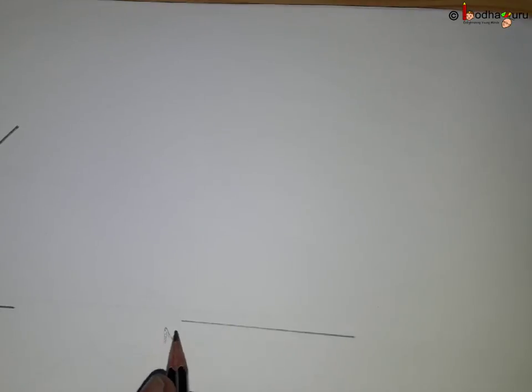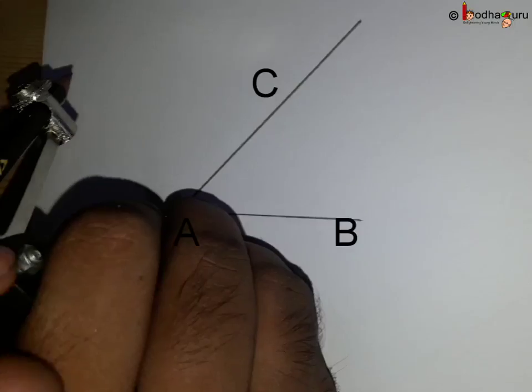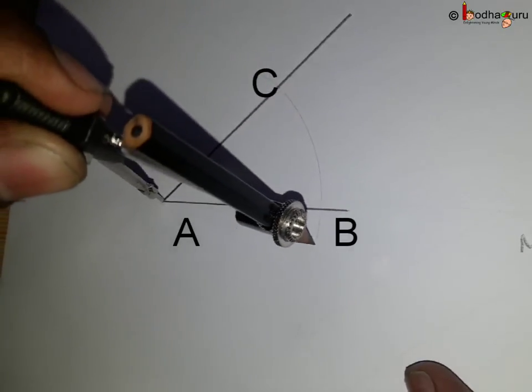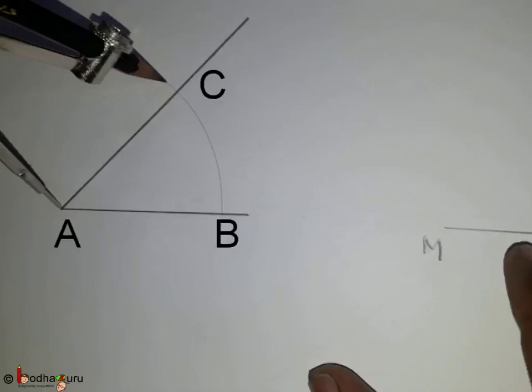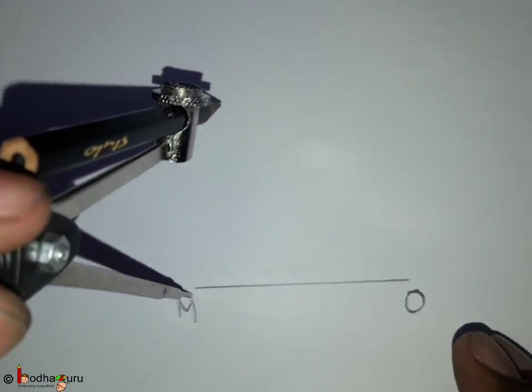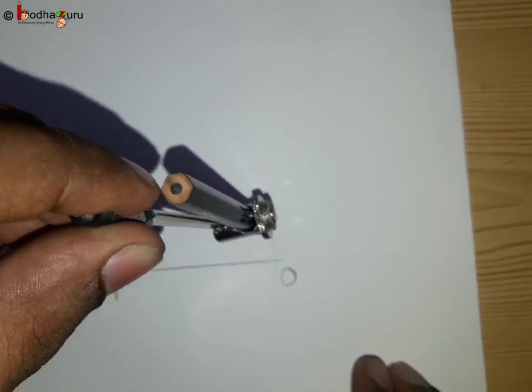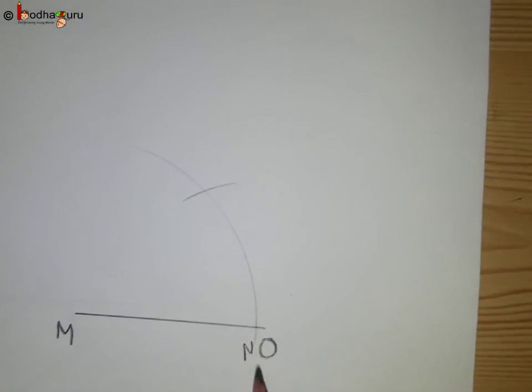We take a line segment, say MO. Now, we put the needle of the compass on point A and draw an arc that intersects the arms of the angle, that is arm AB and AC. Use the same compass measurement and put the needle of the compass on point M, and draw an arc that intersects MO, say at point N.